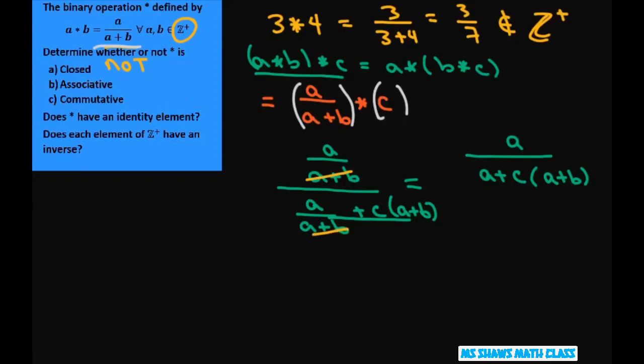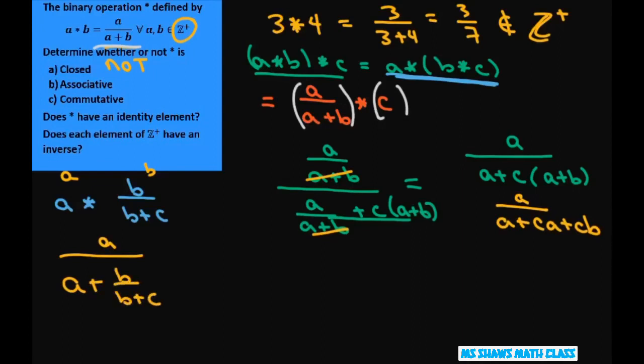Now that gives you, if you want to make this all a common denominator, you have to multiply this by a plus b. And so that's just going to give you a divided by a plus c times a plus b, because these two will cancel. And then you can simplify that. This is going to be a times a plus c a plus c b. Now let's go the other route and let's do this one. So this one's going to be a star b divided by b plus c. So now running it through again, you have to run through this twice. So this is like your a, this part's like your b. So you put the a first, so it's going to be a divided by a plus b divided by b plus c.